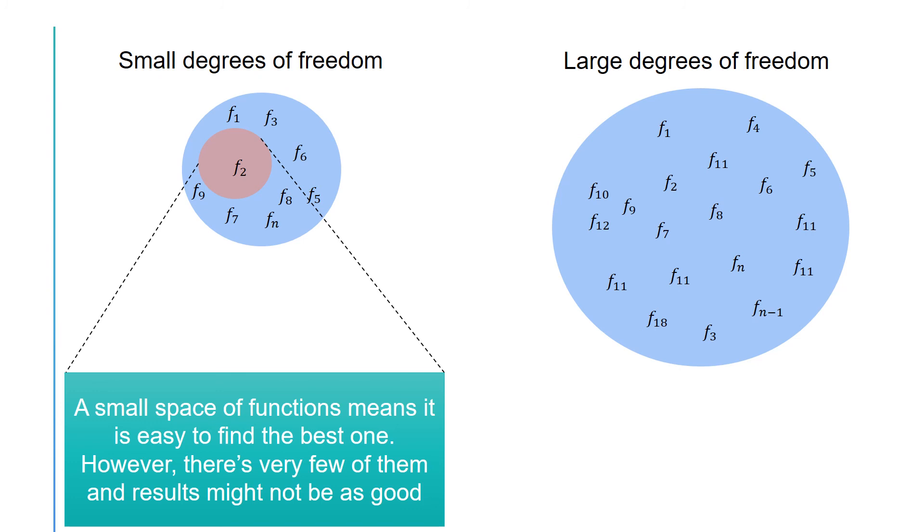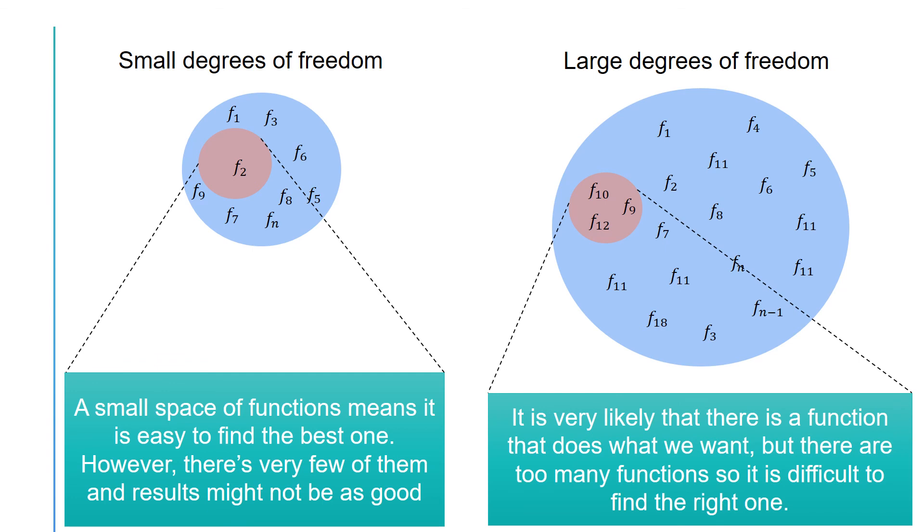In such a case, underfitting has occurred. On the other hand, in a space with large degrees of freedom, it is more likely that there exists a good function somewhere in the space. However, since there are too many functions in this space, it is more difficult to find the right one.